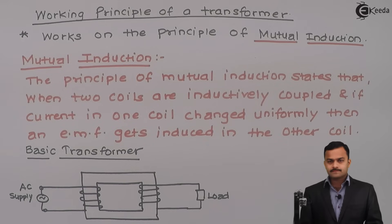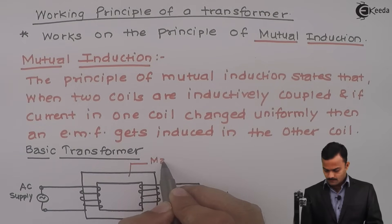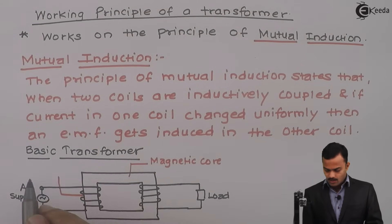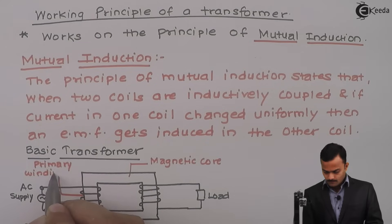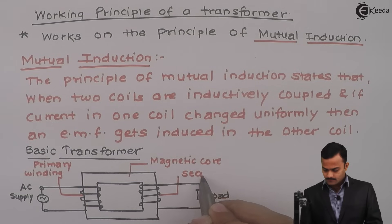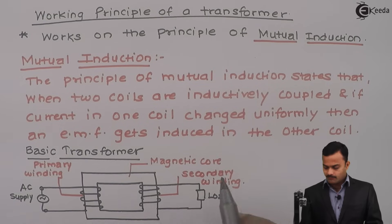In this structure, this is a magnetic core. On this core, two coils are wound. This coil we call as primary winding, and this coil is called secondary winding. How to decide primary and secondary winding? Wherever there is a supply connected, that coil is called primary winding. And wherever the load is connected, that coil is called secondary winding.